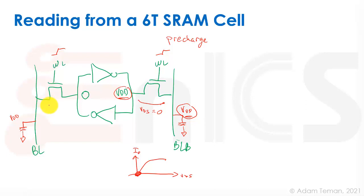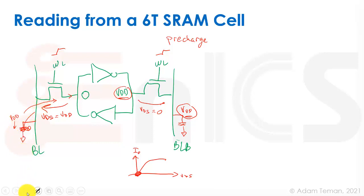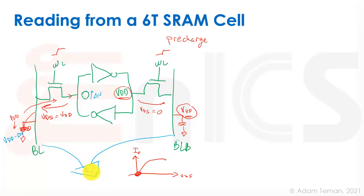On the other side, where the internal node is at 0, VDS equals VDD across the access transistor, so current flows and the bit line begins to discharge — we get VDD minus delta-V on that side. Meanwhile, the other bit line stays at VDD. We feed both bit lines into a sense amplifier (a comparator), which detects that the left side is lower than the right side and outputs a 0.